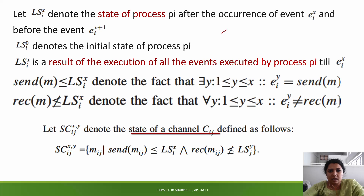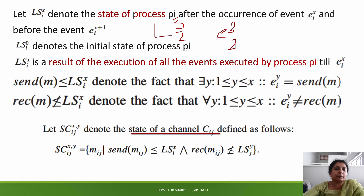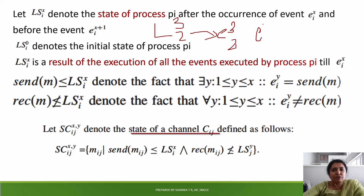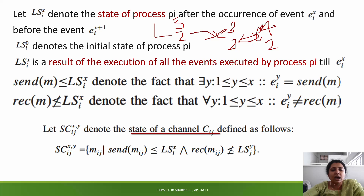We denote the local state as Lij. For example, L23 is the local state of process 2 after its third event. The local state depends on which event has occurred in that process.